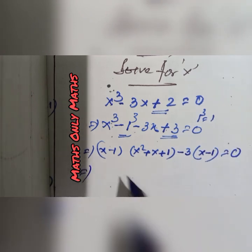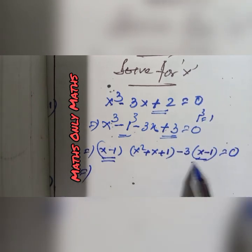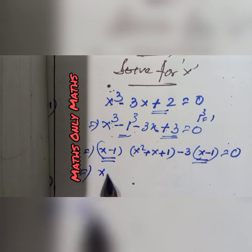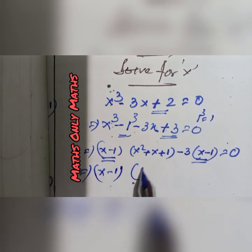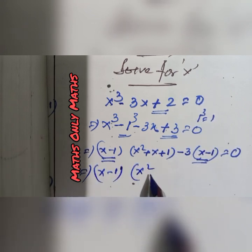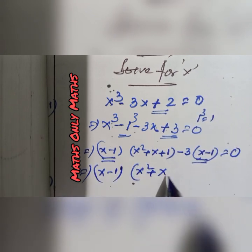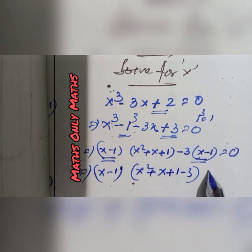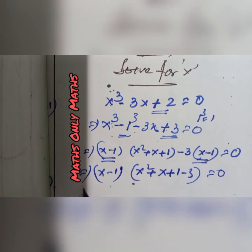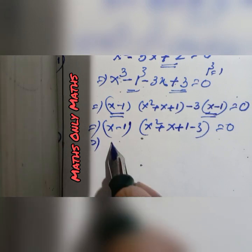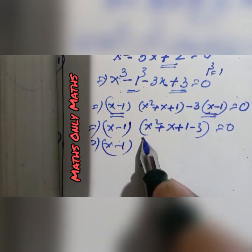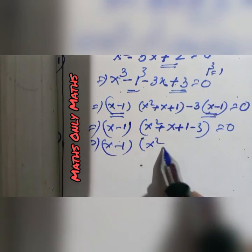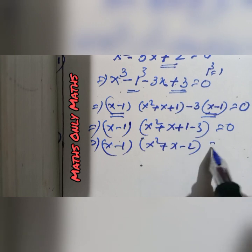Now x minus 1 and x minus 1 — x minus 1 is common. So I get x minus 1 into x square plus x plus 1 minus 3 equals to 0. So I get x minus 1 multiply x square plus x minus 2.